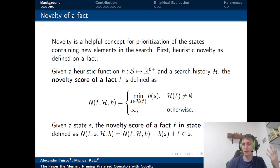We can define this novelty score of a fact as a minimal heuristic value. The minimum value between all the states that have contained this fact. So if we had some states that contain the fact x equals 2, we just take the minimum between their base heuristic values.